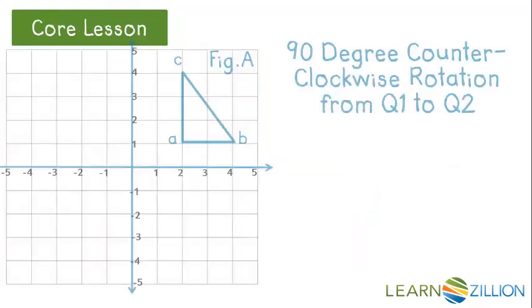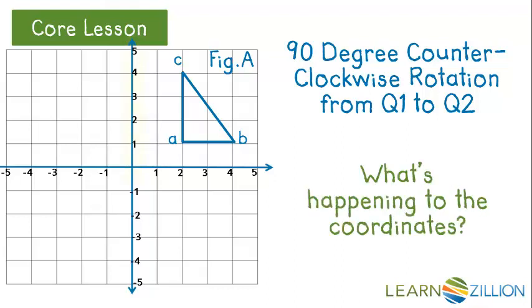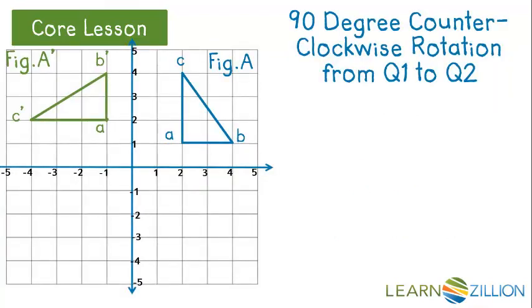We're going to use this information as we look at a 90 degree counterclockwise rotation from quadrant 1, where both x and y values are positive, into quadrant 2, where x values will be negative and y values will be positive. What else is happening? The figure and its image aren't symmetrical like a reflection. Let's take a closer look at the coordinates.